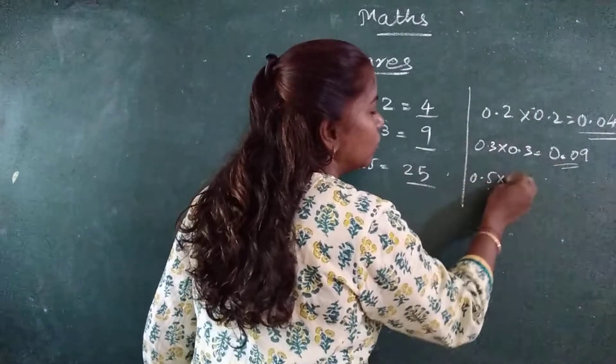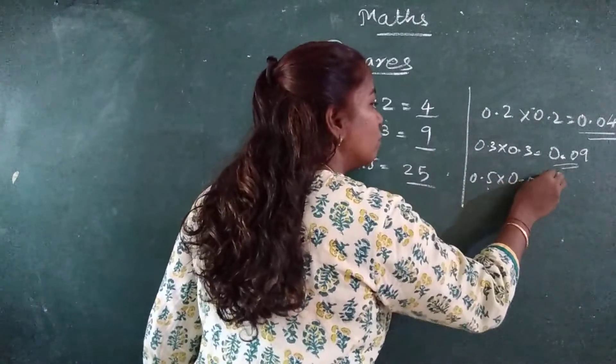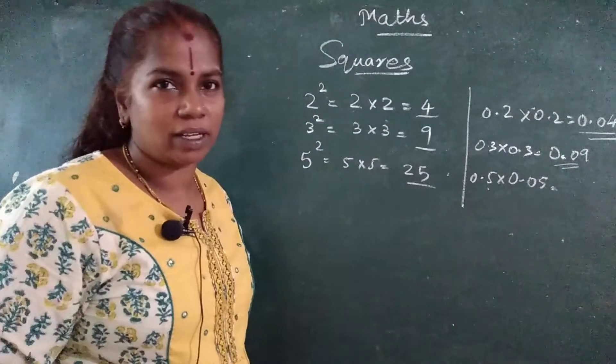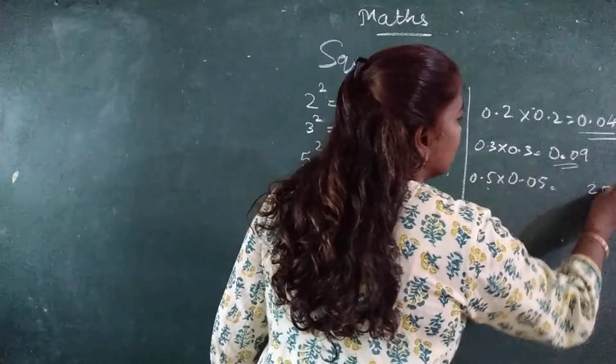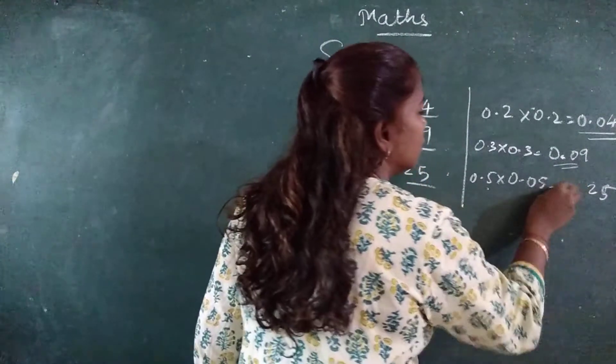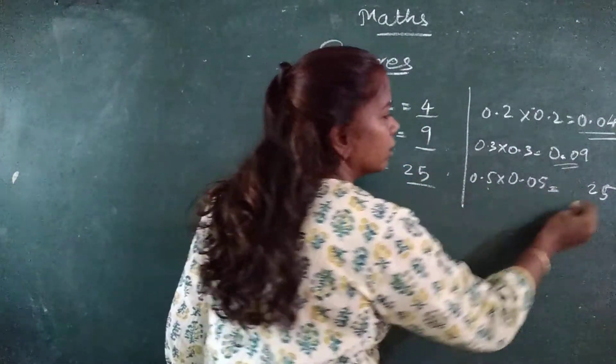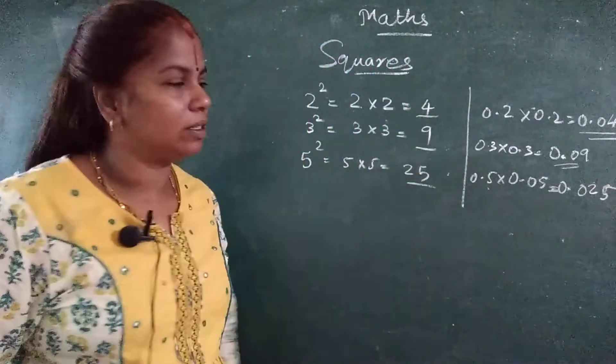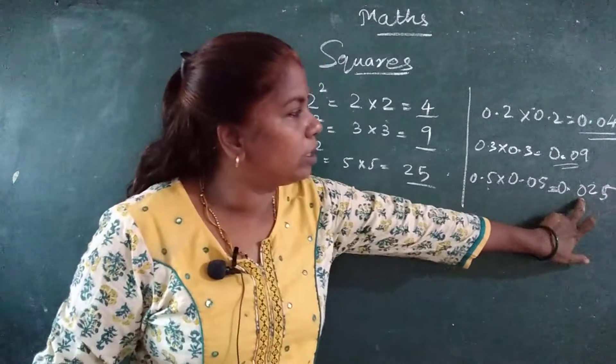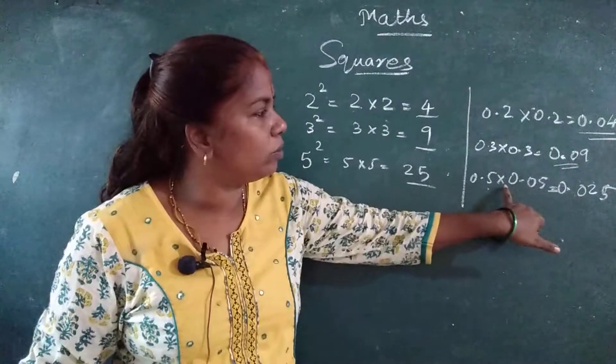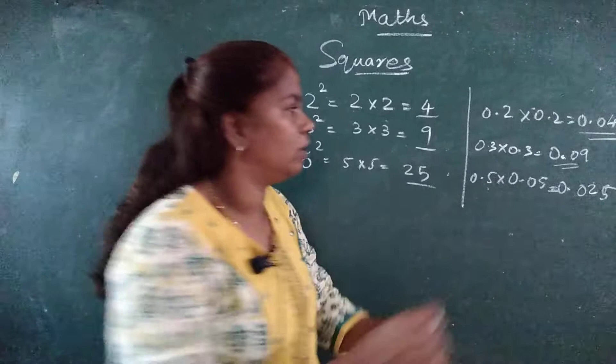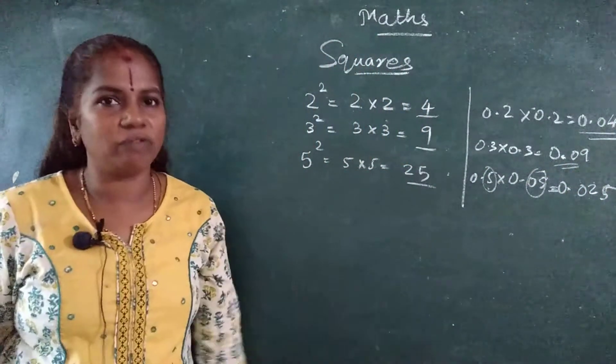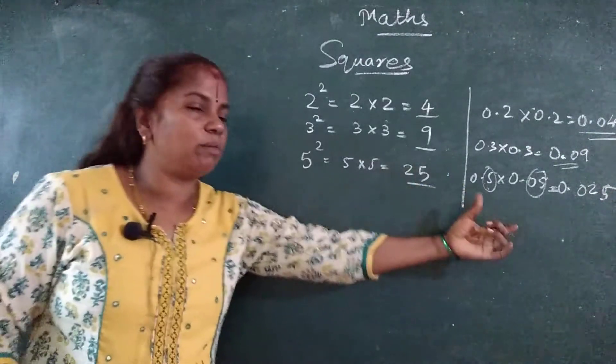Same with 5. 0.5 into 0.05. If I do then how will you do? 5 5's are 25, you know. Correct? One, two, one. Then I will put one more 0 in between. Got it? One, two, three. You know how much? One, two, one. Got it? How many decimals? This is one type of finding squares.